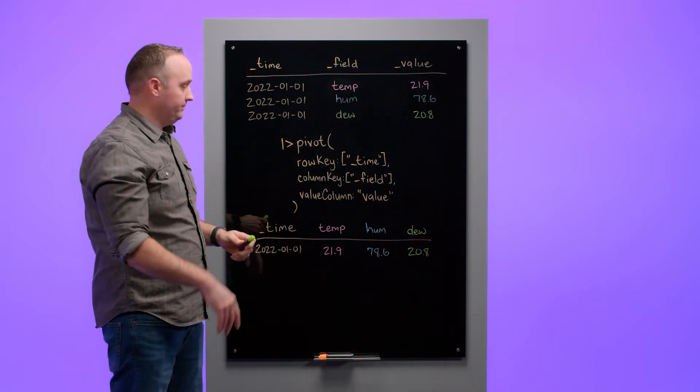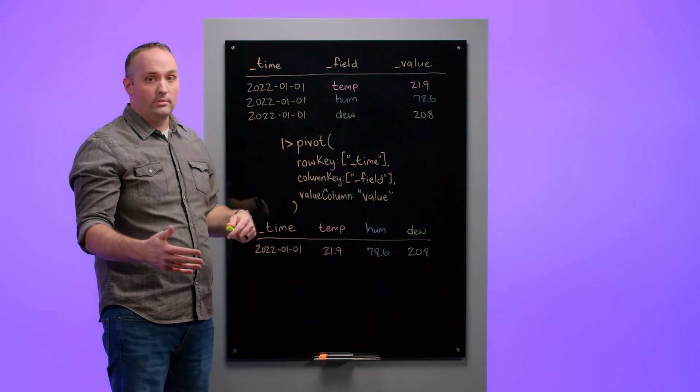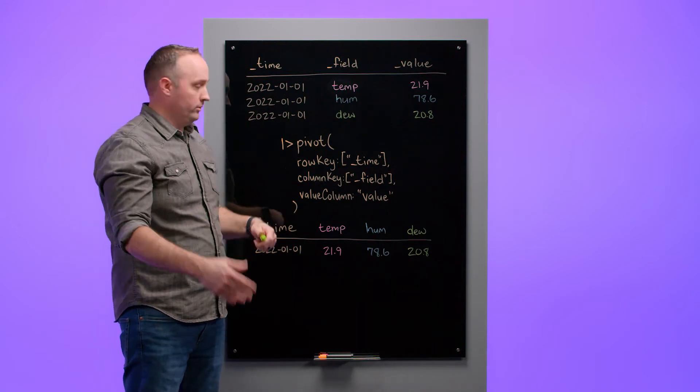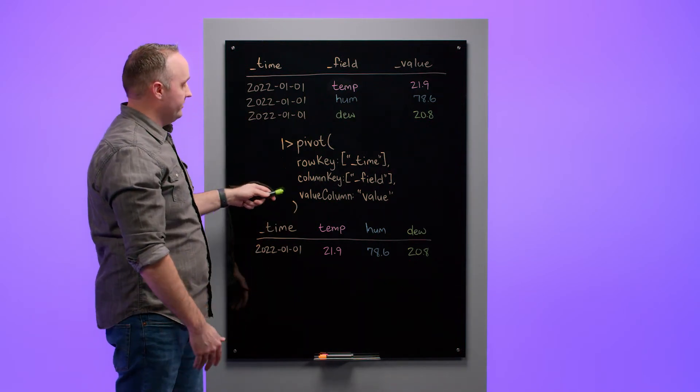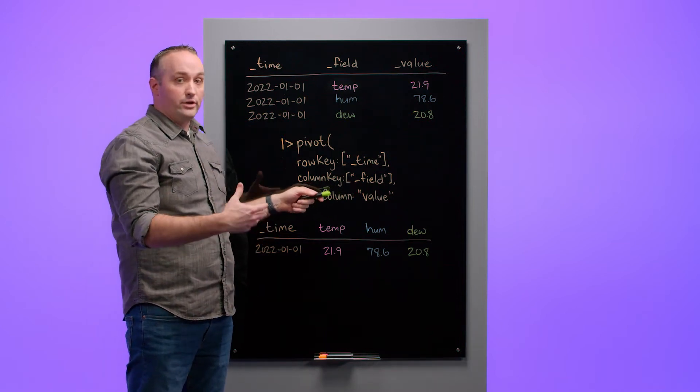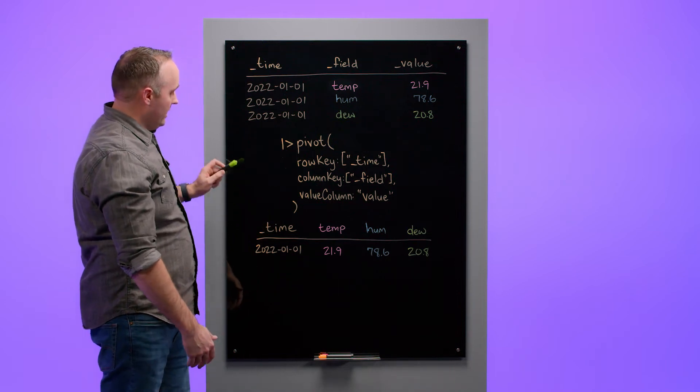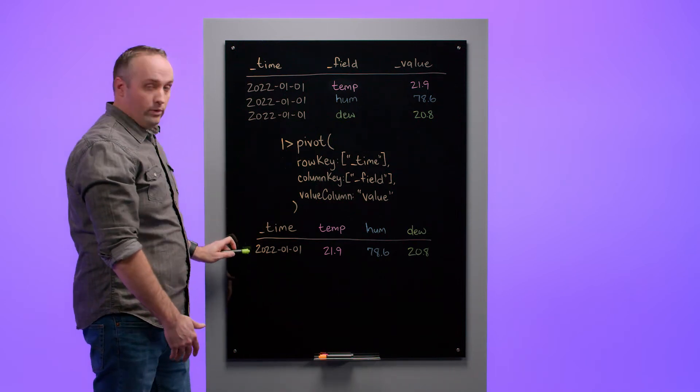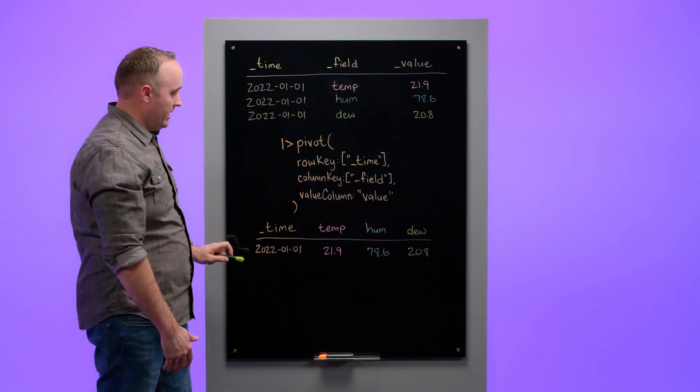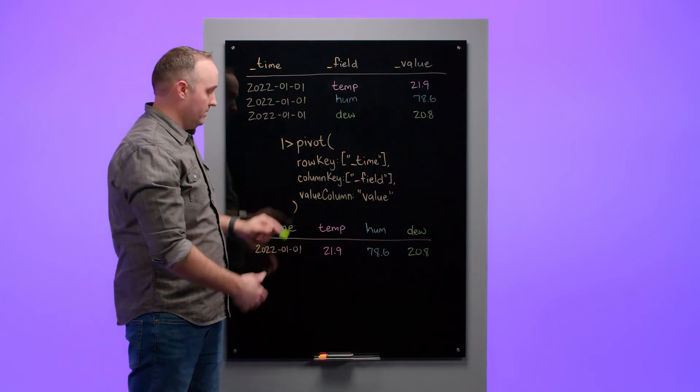I then define the column key. For every unique value in the column key columns, I'll get one new additional column in my output table per row. I then specify the value column, which is which column I pull the value for those new columns from. In this case, my output data will include one row with a single timestamp, and then a new column for each unique field key in my input data.